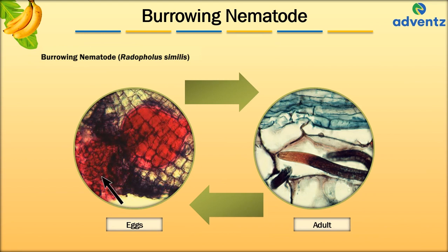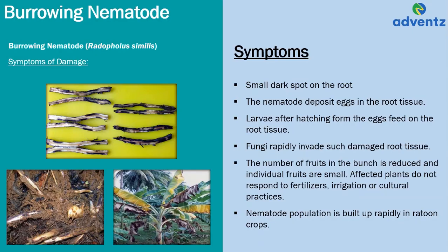The next pest is Burrowing Nematode, also known as Randopholus similis. The images show the birth of burrowing nematode in the form of multiple eggs growing into an adult. The first symptom is a small dark spot on the root. The nematode deposits eggs in the root tissue; larvae after hatching feed on the root tissue. Fungi rapidly invade such damaged root tissues, the number of fruits in the bunch are reduced, and individual fruits are smaller. Affected plants do not respond to fertilizers, irrigation, or cultural practices, and nematode population builds up rapidly in ratoon crops.